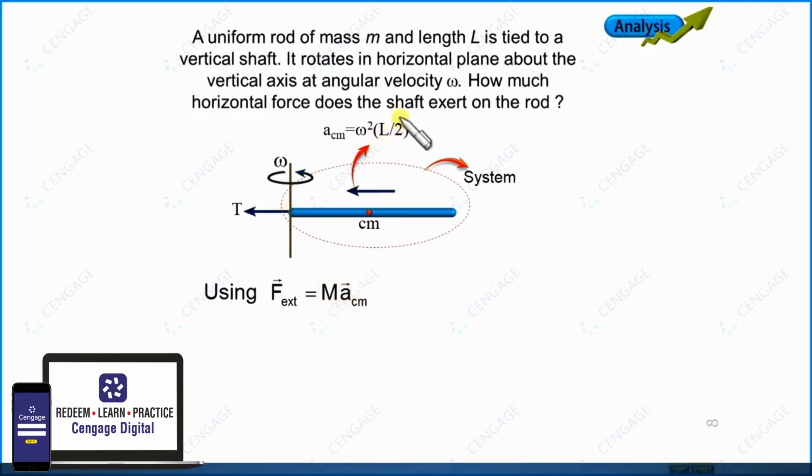Acceleration, as we discussed, is again in the leftward direction. So here we can write capital T equals M multiplied by omega square L by 2. This is the force exerted by the shaft on the rod. This is the horizontal force: one-half M omega square L.